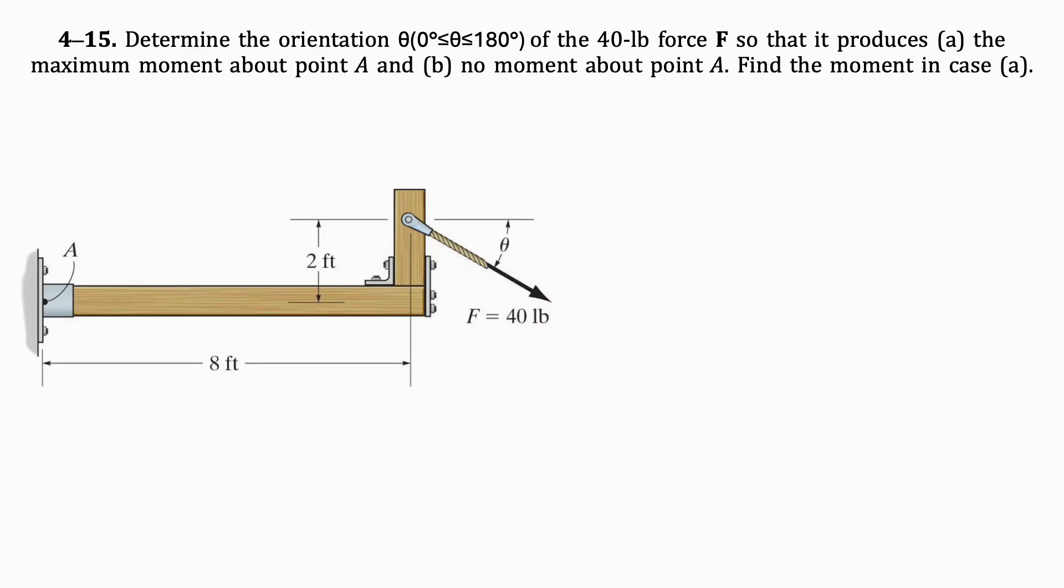Let's move on to the next part of the question that asks us to find the angle that generates no moment. We will repeat the same process that we just did for the first part of the question, splitting F into components and then rearranging the moment equation to find the angle.